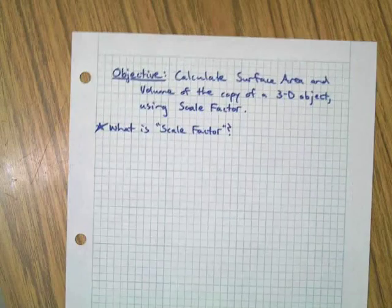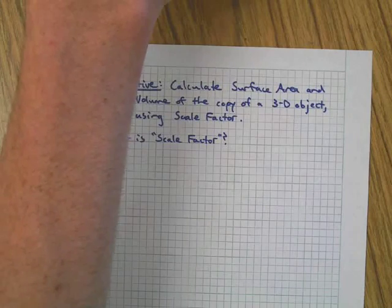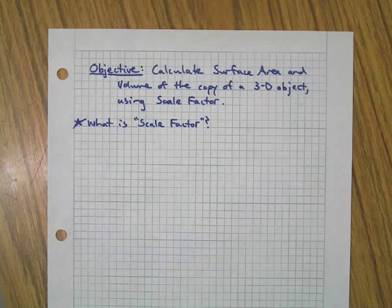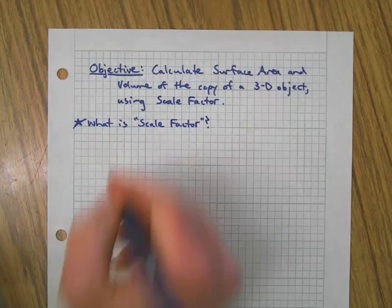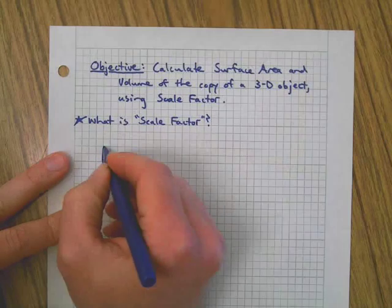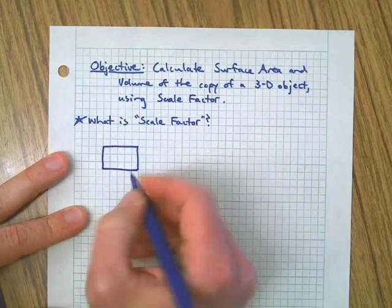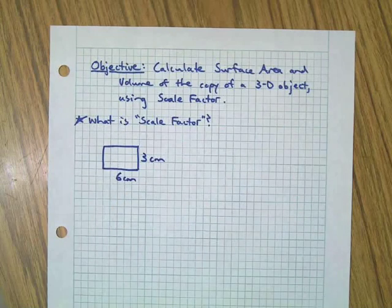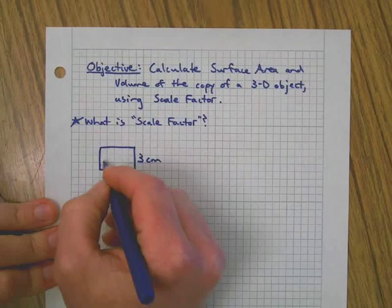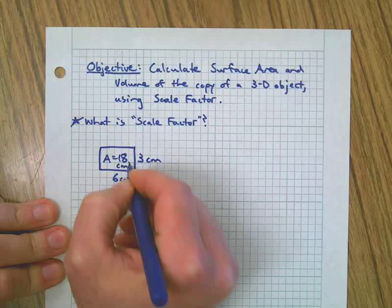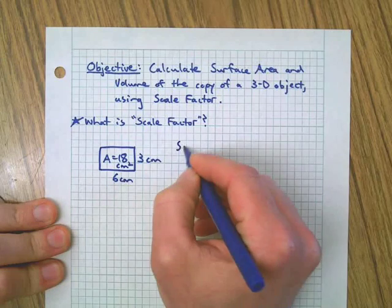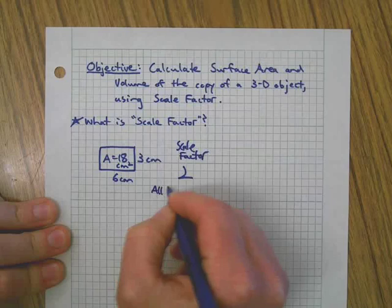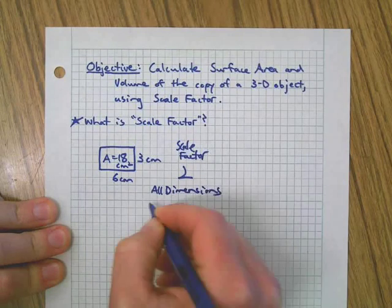What is scale factor? It's a number that we use to multiply all the measurements or dimensions of a 3D object by to get the new measurements for another object. For example, if I have a two-dimensional object — say a piece of paper — and it's 6 by 3, the area is 18 because 6 times 3 equals 18. Now if I have a scale factor of 2, that means all dimensions get doubled, or multiplied by 2.